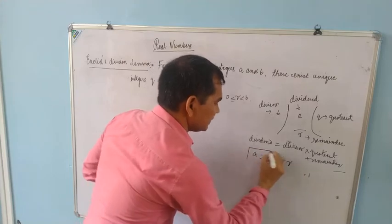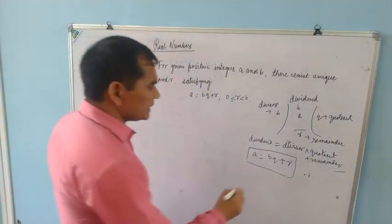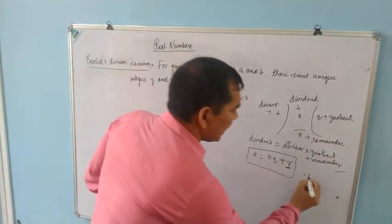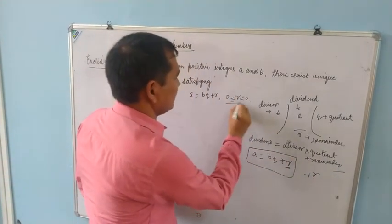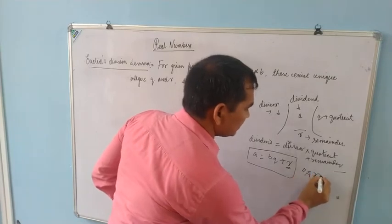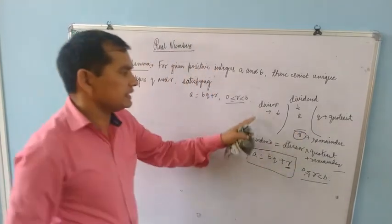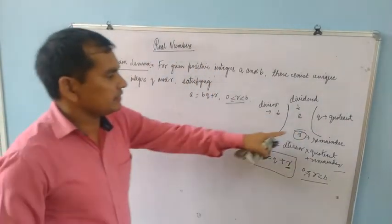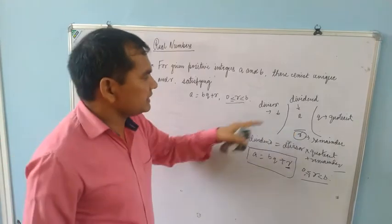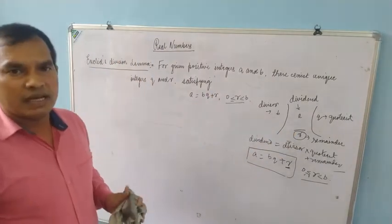So we are writing A = BQ + R, but there is an important condition here: R must be greater than or equal to 0 and less than B. This means the remainder is always less than the divisor. That is a very important condition, because if this condition is not satisfied then this statement will not be verified.